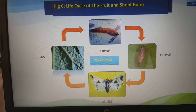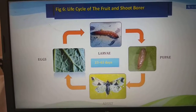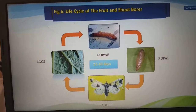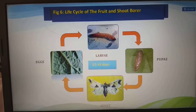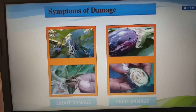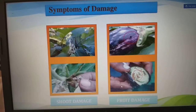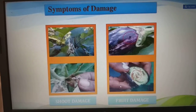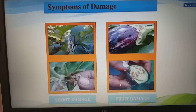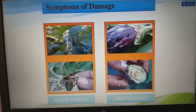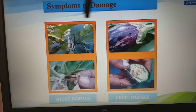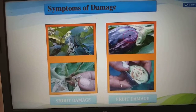The life cycle of the fruit and shoot borer takes around 25 to 43 days for complete development. The symptoms of damage are visible when you open and cut — you will see both shoot damage as well as fruit damage.